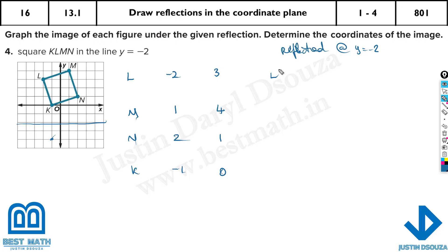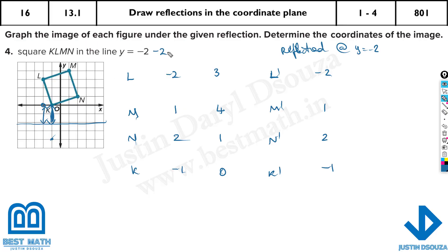For the reflection at y is equal to minus 2: the x values remain the same — minus 2, 1, 2, and minus 1. Only the y values change. For K prime: the distance from y=0 to the line y=minus 2 is 2, so minus 2 minus 2 = minus 4. For N prime: distance is 3, so minus 2 minus 3 = minus 5.